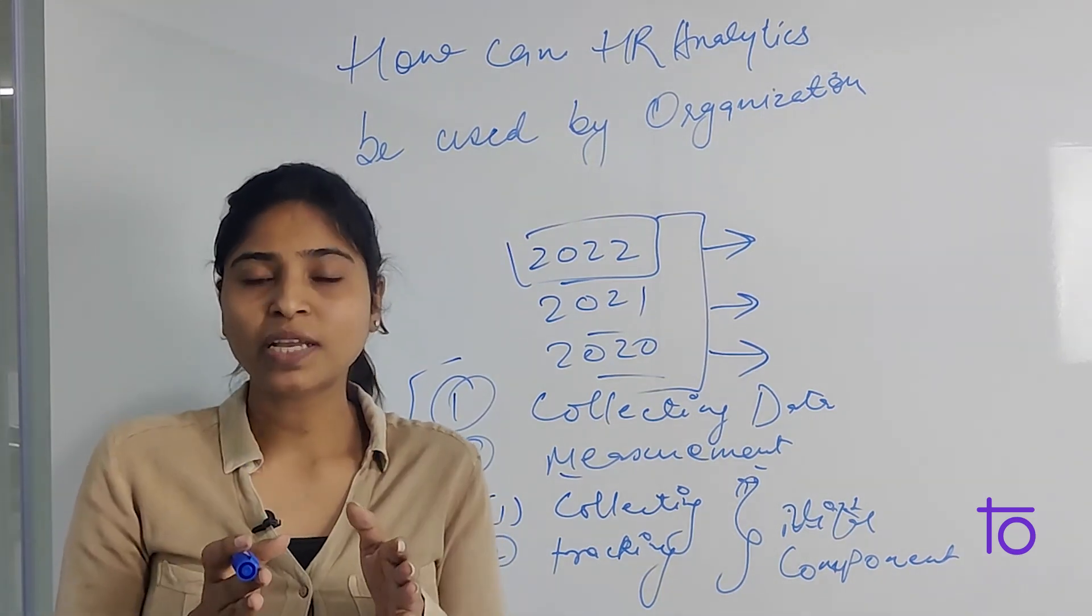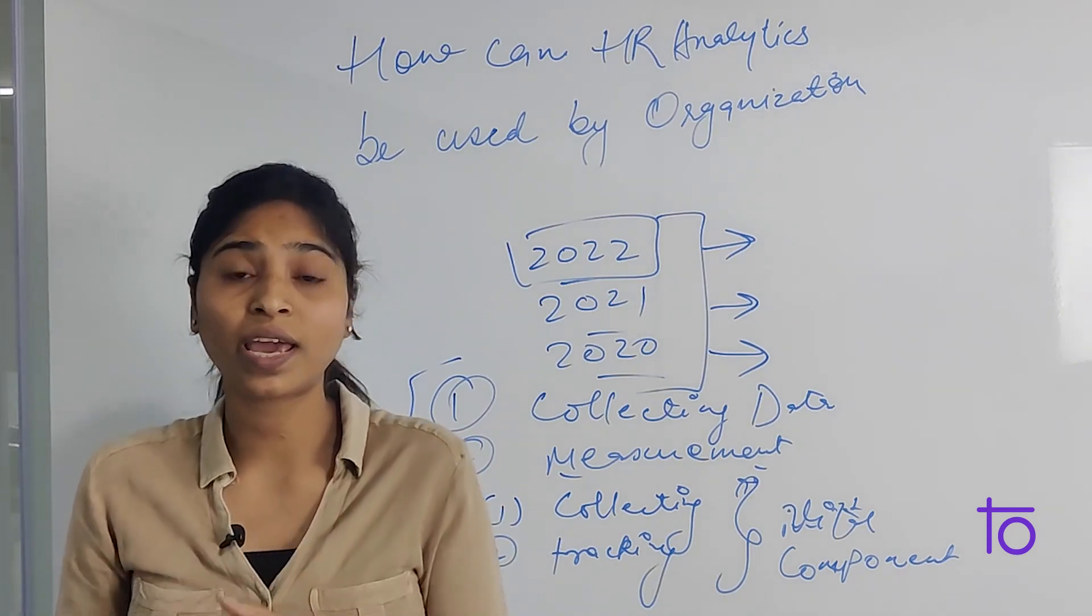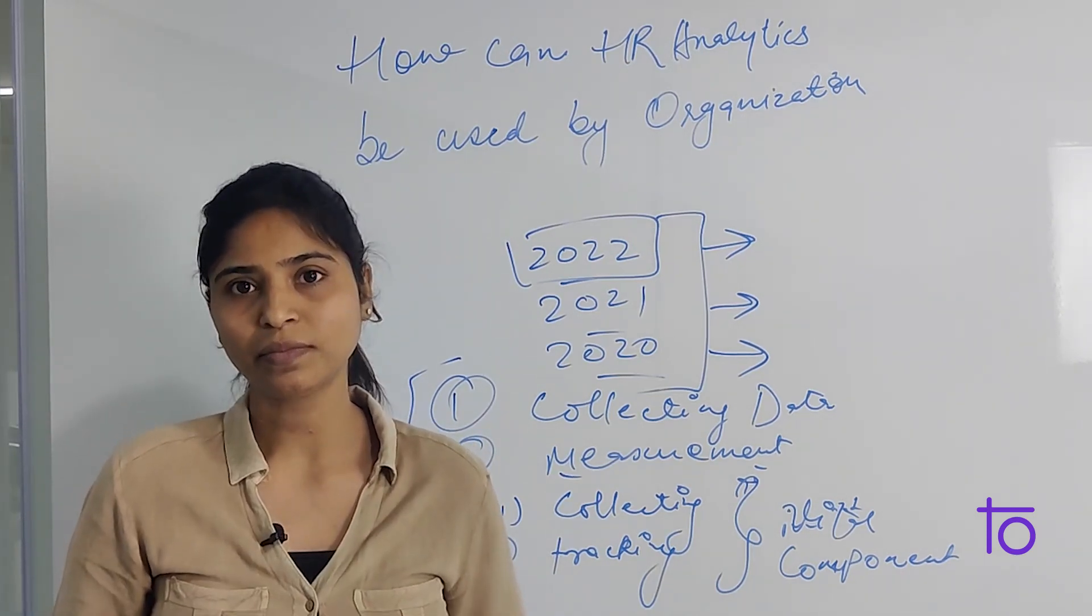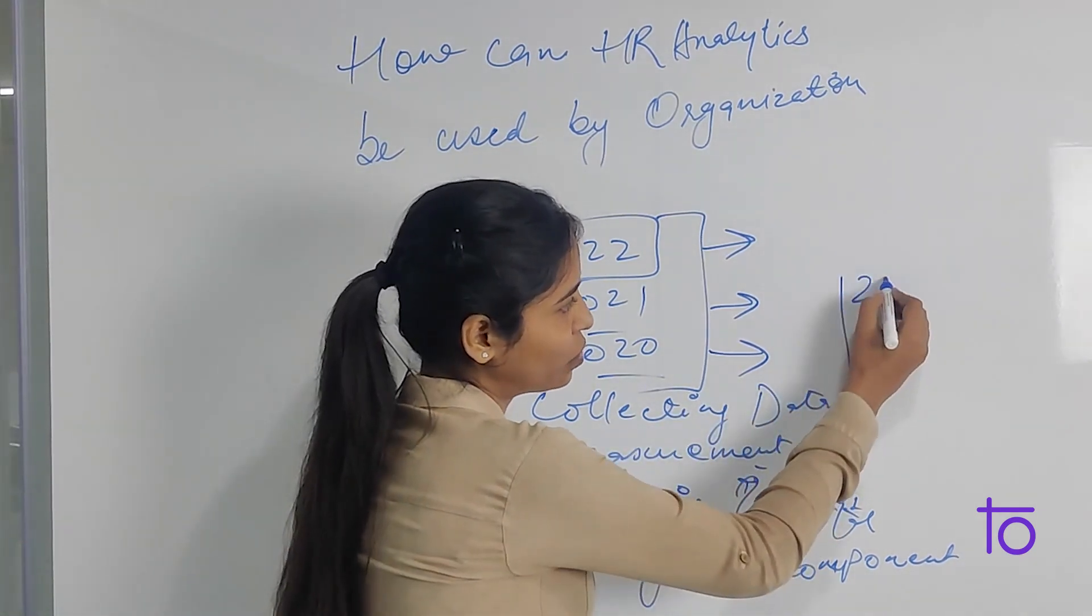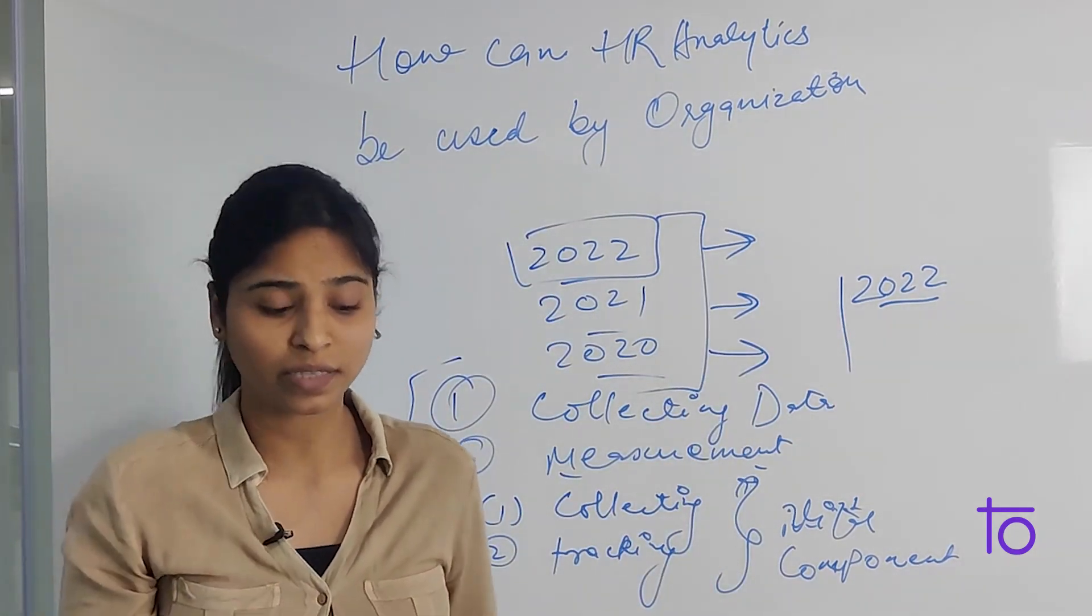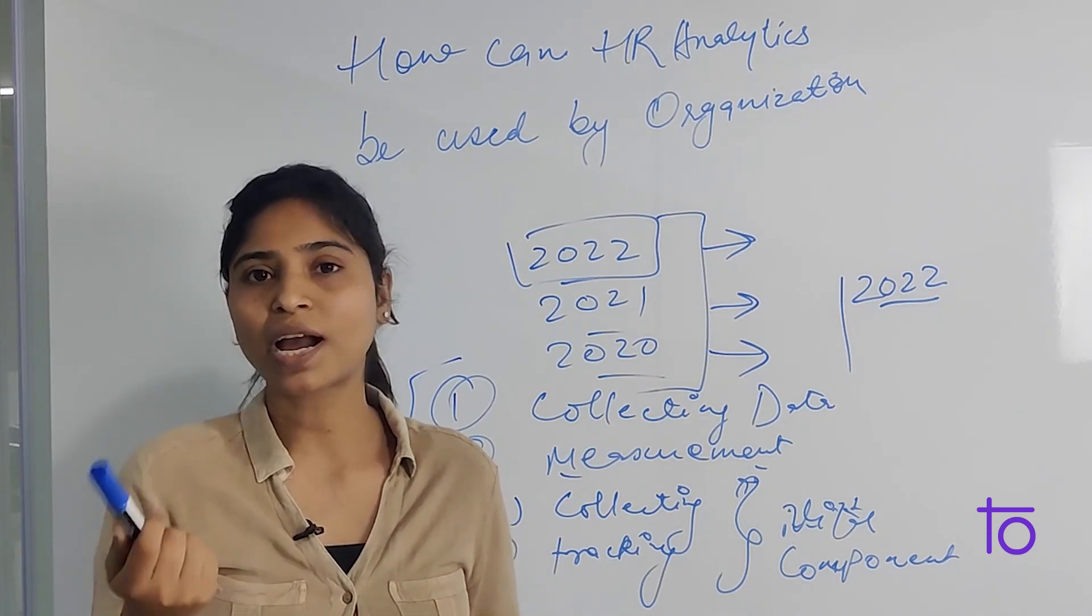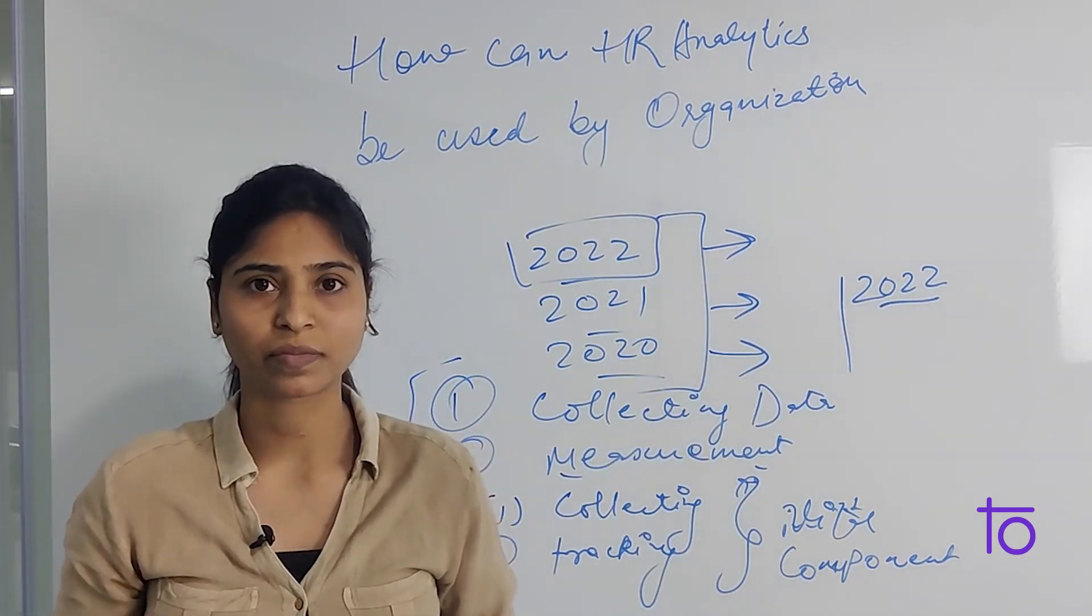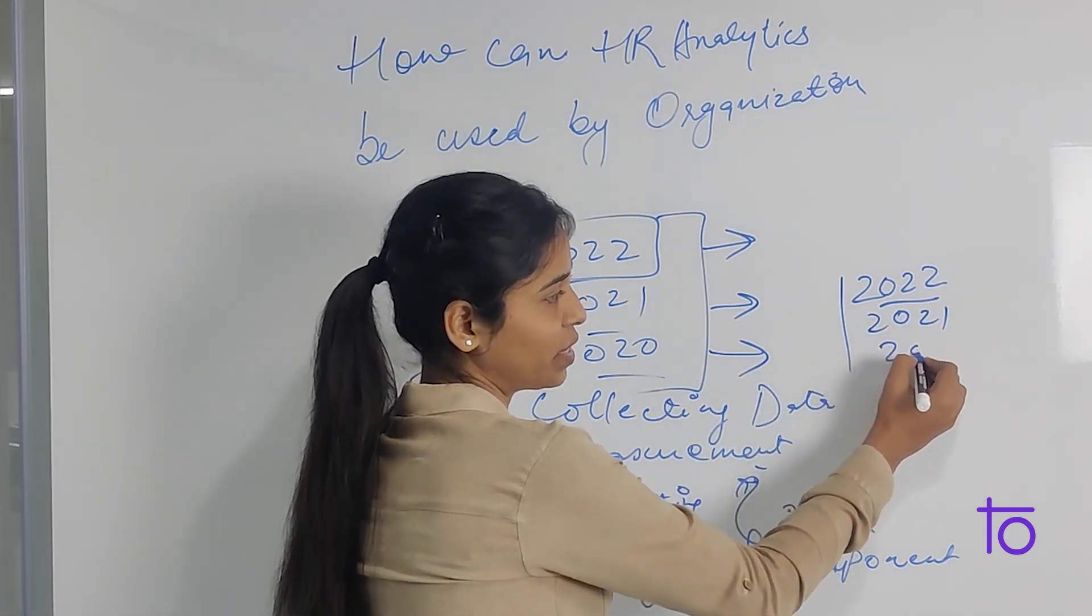The process of measurement cannot rely on a single snapshot of data. For example, if we have only 2022 data, it will not give us better results. We can't rely on only a single snapshot of data. For that, we need the last to last year's data as well.